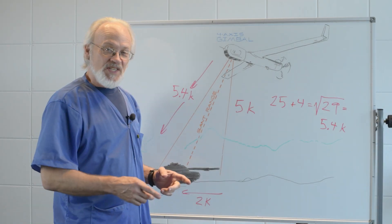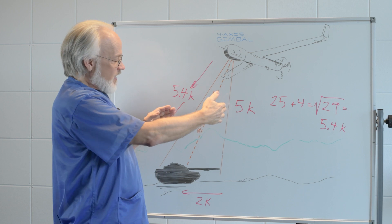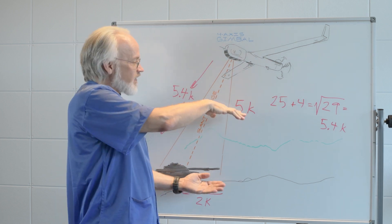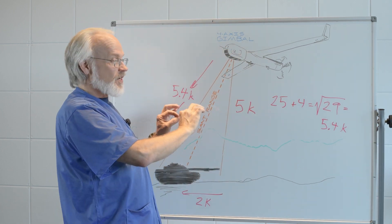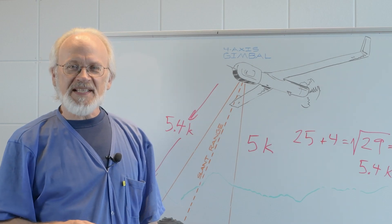In summary, slant range is just the distance from the imager to the object, but it takes into account the geometry of the imager being up at an altitude instead of just looking horizontally across the ground. I'm Stan Voynick, and this has been Ask an Expert.